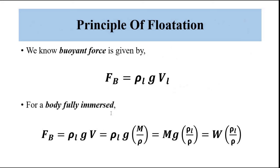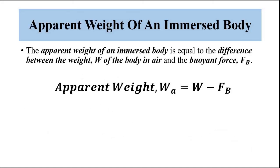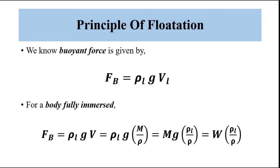Now let's discuss the principle of flotation, which depends on apparent weight. The force of buoyancy is given by ρ_L × g × V_L. For a fully immersed body, the volume of displaced liquid equals the total volume of the body, which can be expressed as m/ρ — where m is the mass of the body and ρ is the density of the object. So buoyant force equals ρ_L × g × (m/ρ).